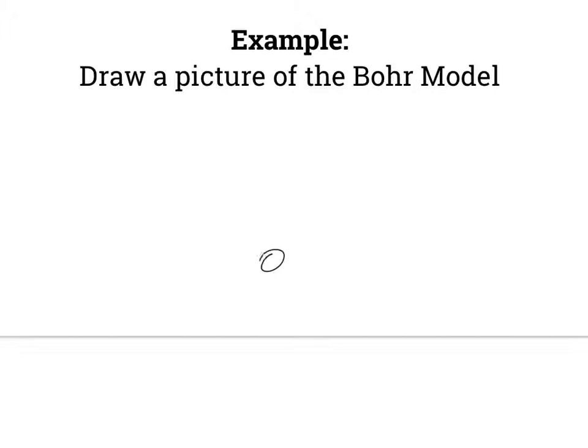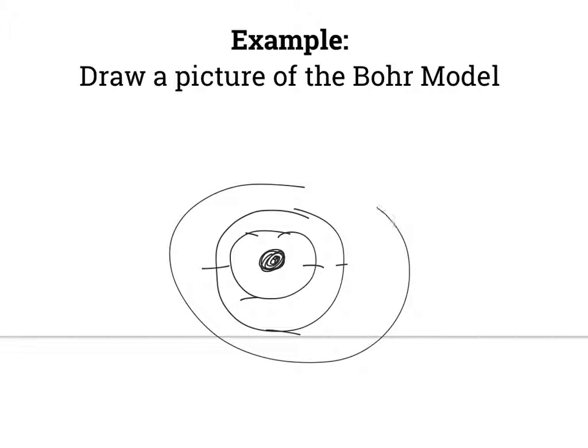So draw a picture as you saw. You got your nucleus and your electrons are basically out orbiting the nucleus. Draw circles with basically negatives on it. And that's the Bohr model. And that actually works, it's pretty close to being right. You'll see pretty soon what's wrong with it, but that's the Bohr model.